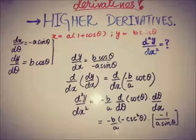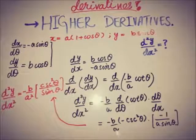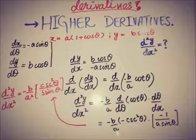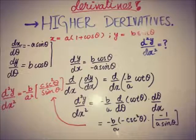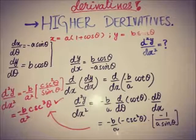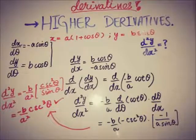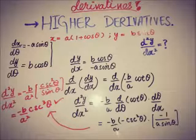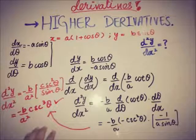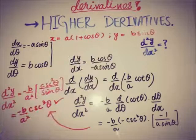Combining the terms, the second derivative becomes −b/(a² sin³θ), since sinθ is the reciprocal of cscθ. And this is the second derivative of the parametric function.